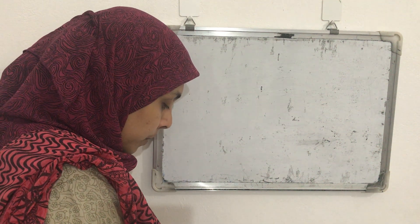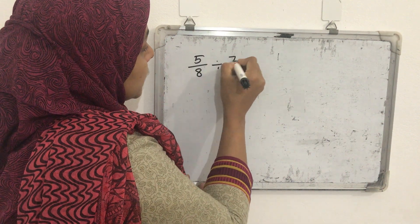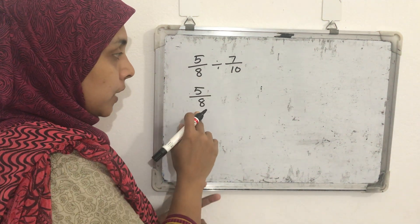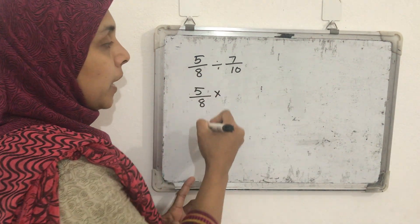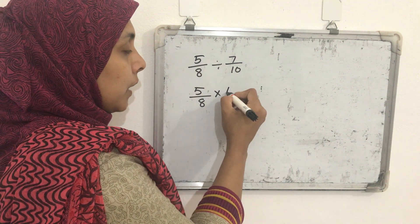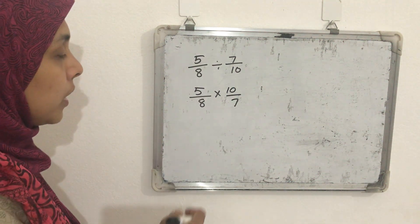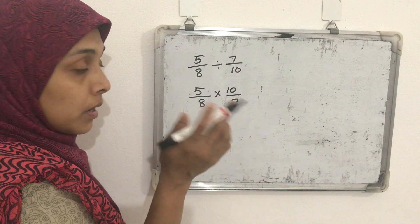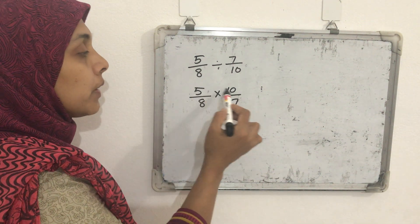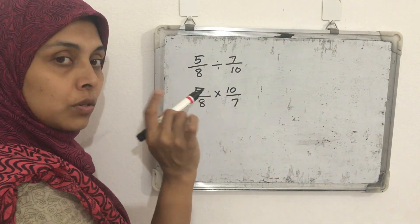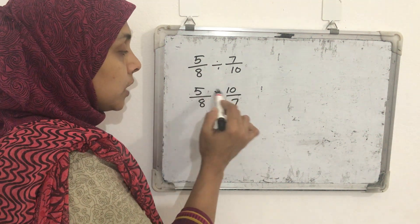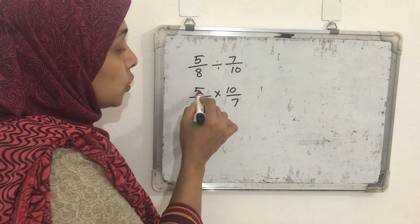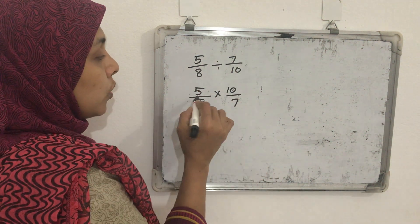Another question: 5/8 divided by 7/10. We write the first rational 5/8 without change, then multiply by the reciprocal of 7/10, which is 10/7. Now check common factors: 5 and 8 have none, 5 and 7 have none. Someone might cancel 5 and 10 — but don't do that here because both 5 and 10 are in the numerators. We can only cancel one number from the numerator with one from the denominator.